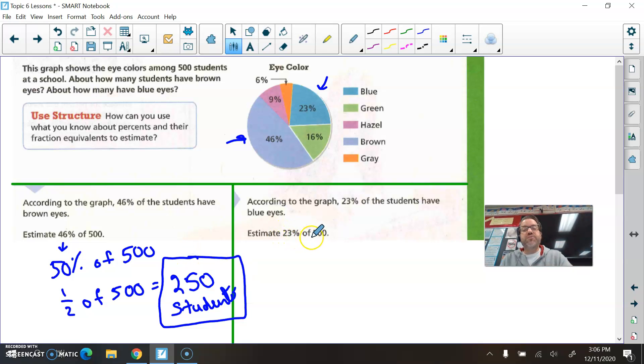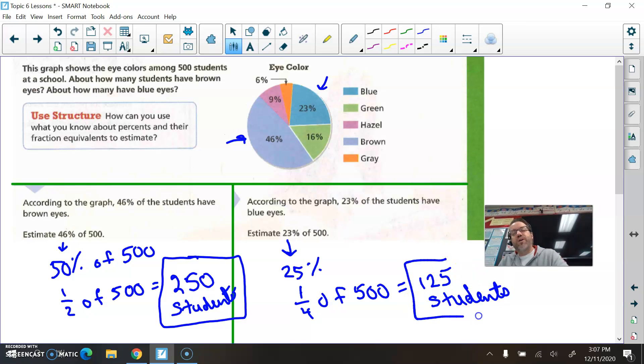Now, it wasn't 50%. It was 46%. So it'll be a little under this. It'll be a little less than 250 students. But we're just estimating. Now, if we want to estimate the number of students who have blue eyes, 23% is close to 25%. And remember, our benchmark fraction for this one would be one-fourth. So we want one-fourth of 500.